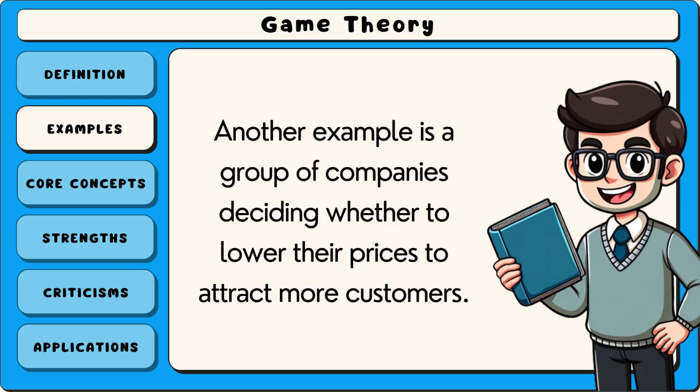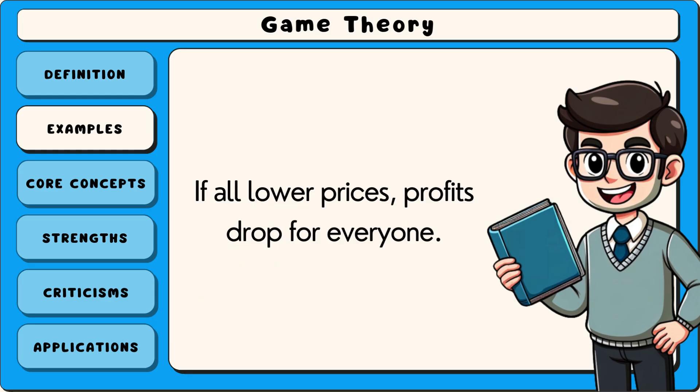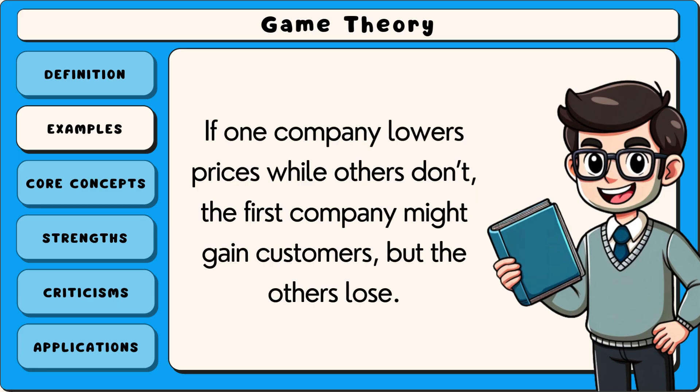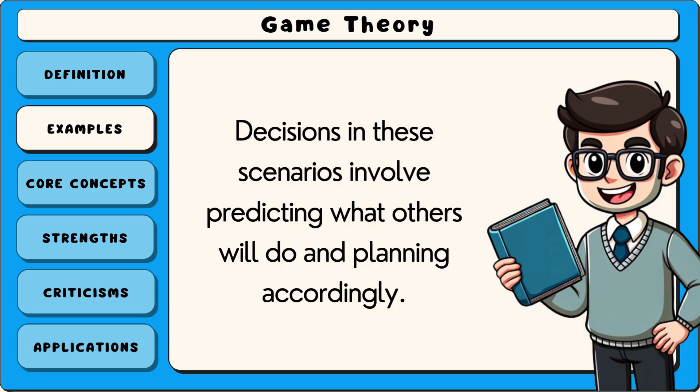Another example is a group of companies deciding whether to lower their prices to attract more customers. If all lower prices, profits drop for everyone. If one company lowers prices while others don't, the first company might gain customers but the others lose. Decisions in these scenarios involve predicting what others will do and planning accordingly.